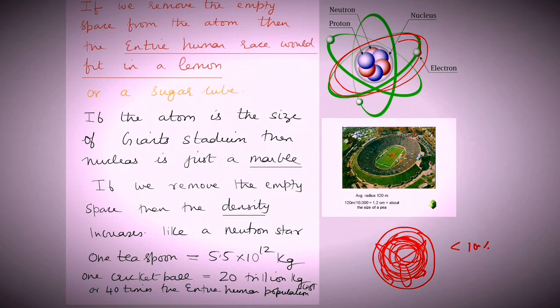If that is done, naturally, the density of the material will be so high. But such densities do exist in nature. For example, like a neutron star. In a neutron star, one teaspoon is 5.5 into 10 to the power of 12 kg, or one cricket ball would be 20 trillion kgs, which would possibly fit the entire human race.